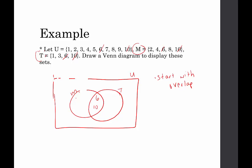What's left in M? We have 2, 4, and 8. And in T, we have 1 and 3. Anything that wasn't represented — we have 5, 7, and 9 left. Those will go in the rectangle but not within the circles. So we put 5, 7, 9 anywhere in the rectangle you'd like. This would be one example of drawing a Venn diagram.